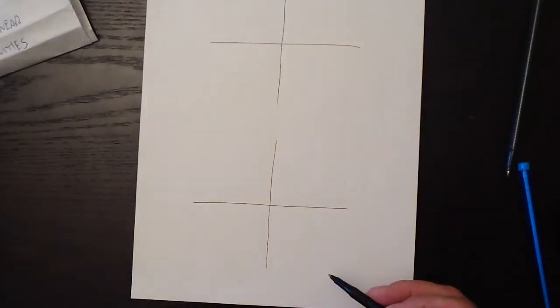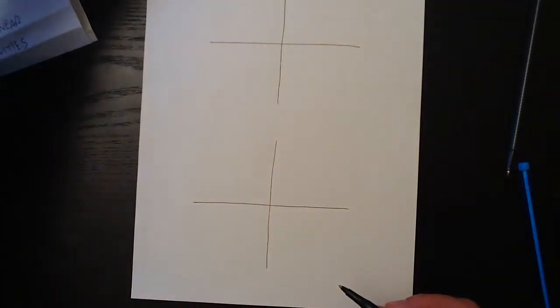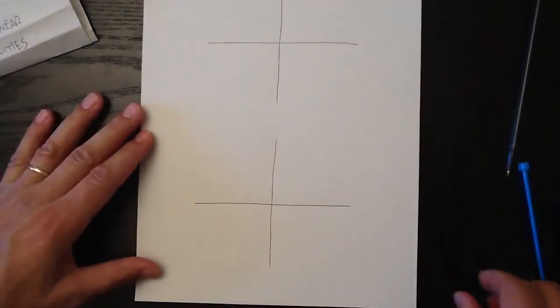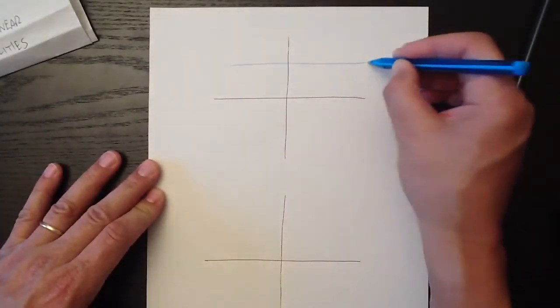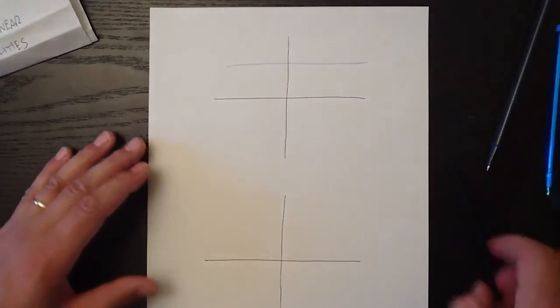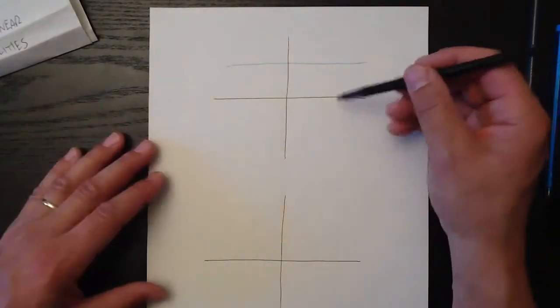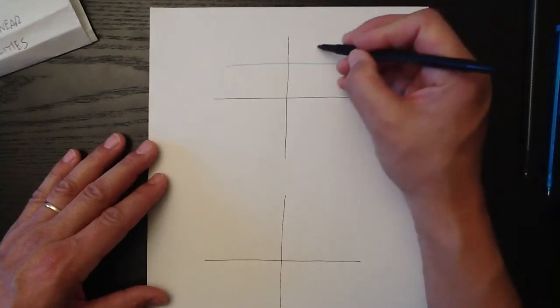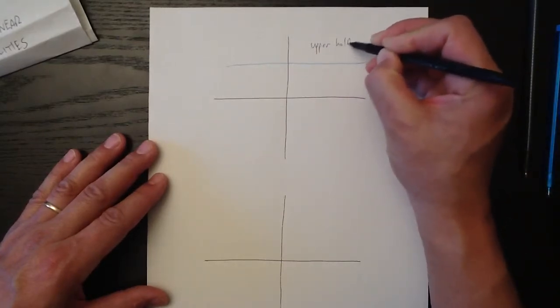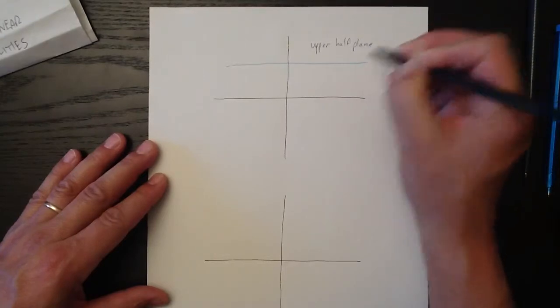Moving right along then, what happens if we have a horizontal line? Let's draw a horizontal line on this plane. And when we have a horizontal plane, obviously we split the universe in half again, but instead of a left and a right half plane, we have an upper half plane and a lower half plane.